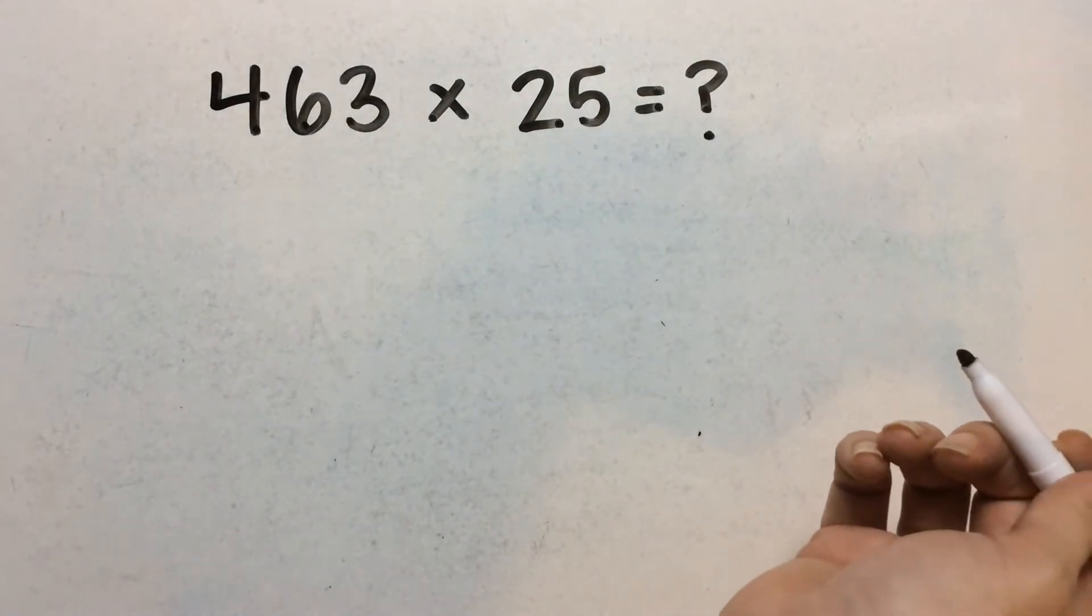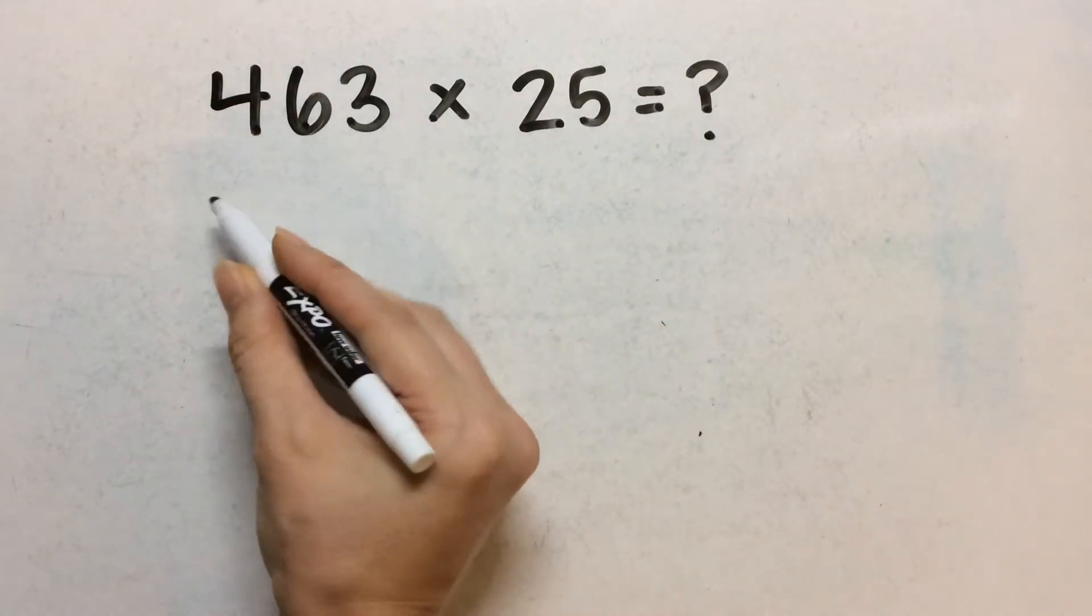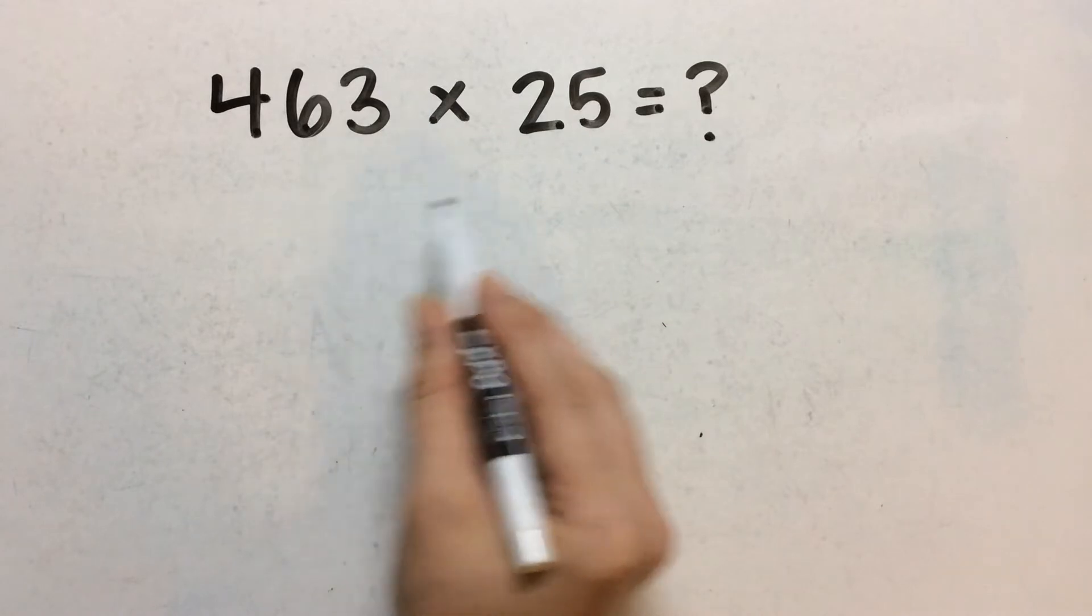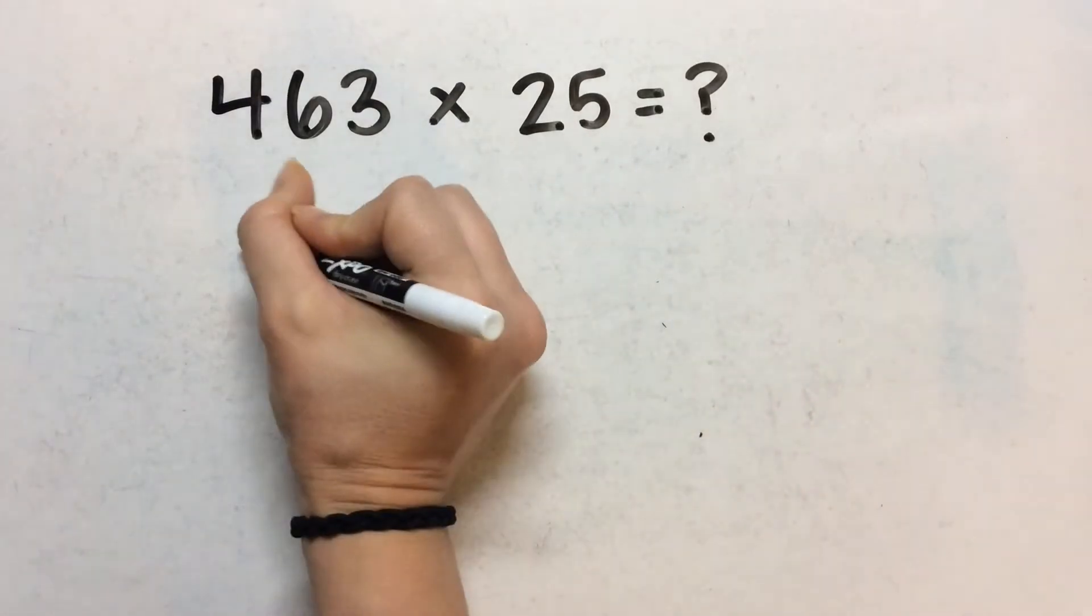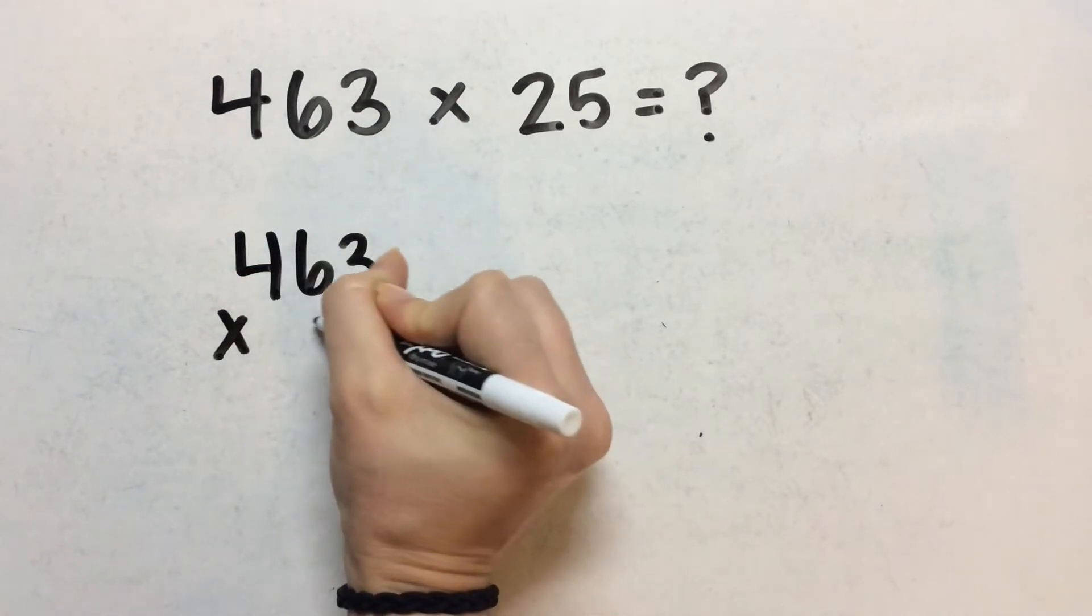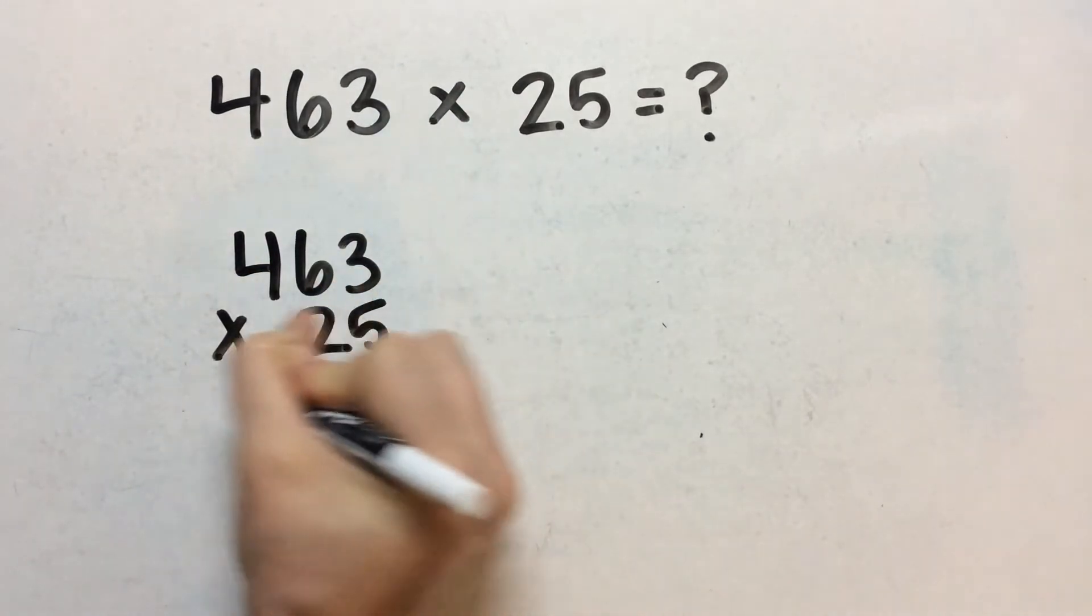So first I'm going to show you the standard algorithm, which is just stacking these two numbers on top of each other lining up your place values. So 463 times 25 like this.